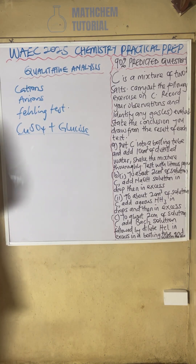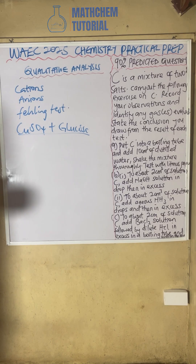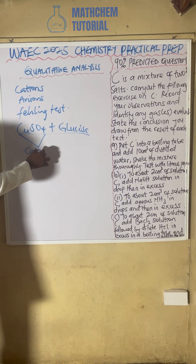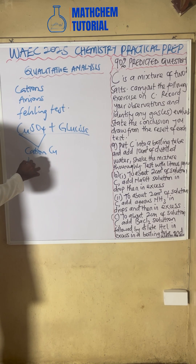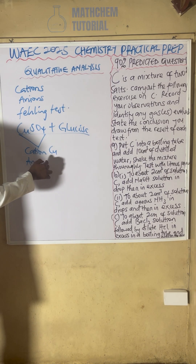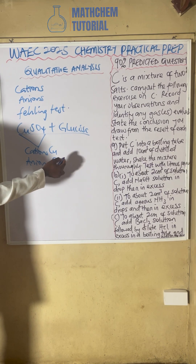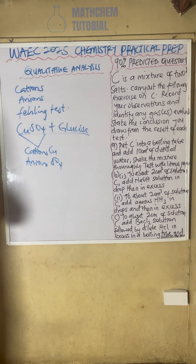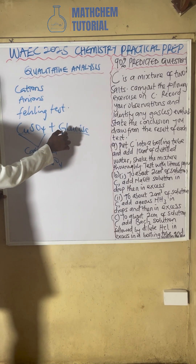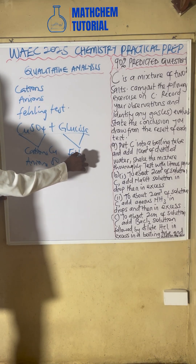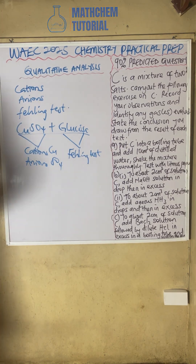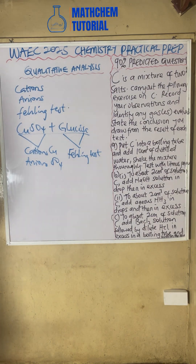These are the two samples you'll be given, although they will be mixed together and called Sample C. From the copper sulfate, we will be testing for cations — which is copper — and also for the anions, which is SO₄²⁻ or SO₃²⁻ and others. For the glucose, we'll be using the Fehling's test to test for reducing sugar.